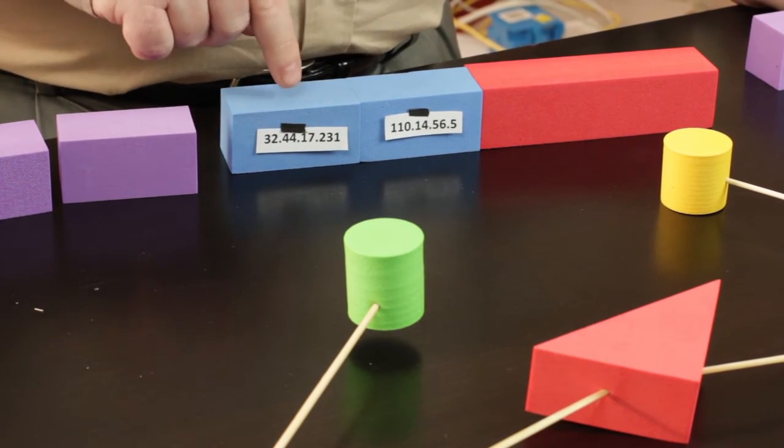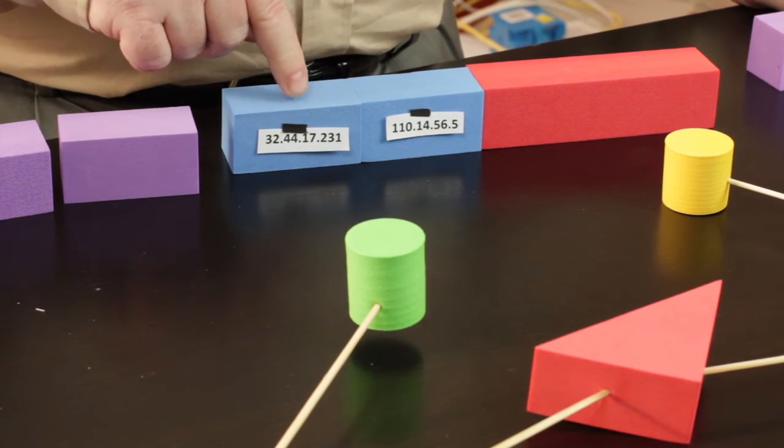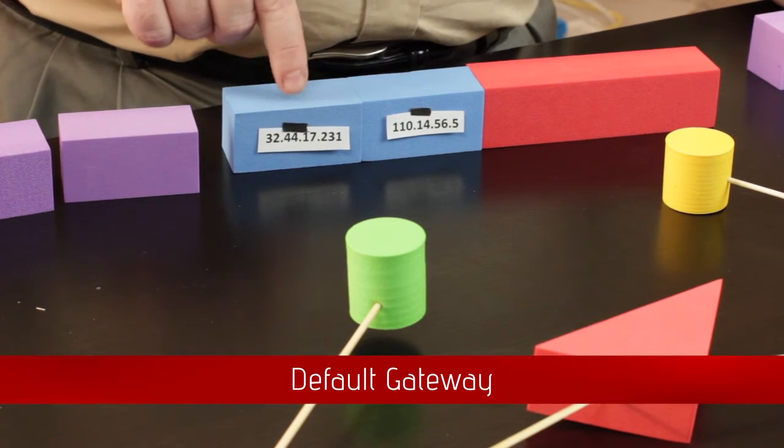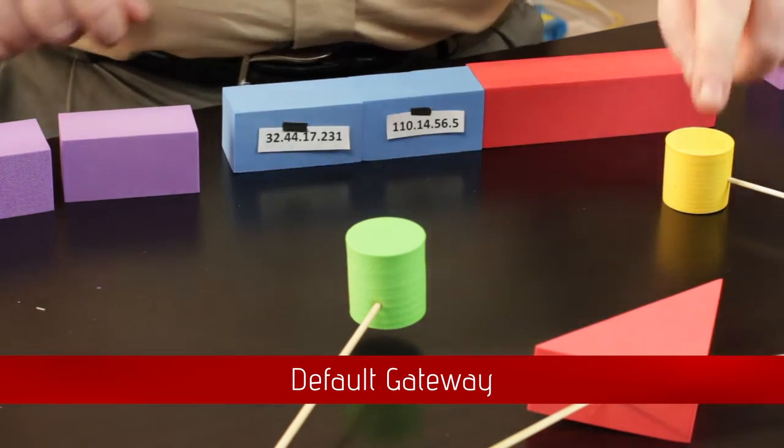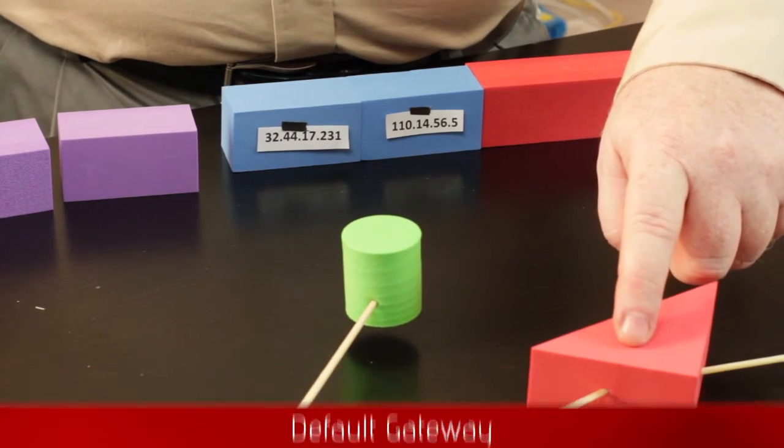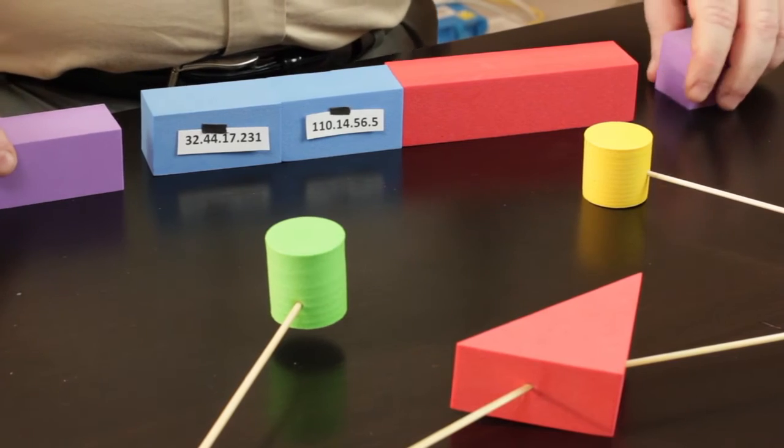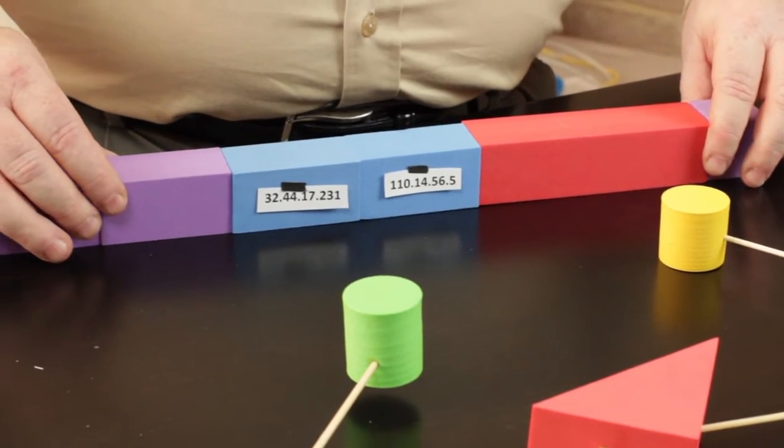When that happens, built into every computer in the universe, at least everyone that's on the internet, is something called a default gateway. The default gateway is invariably the connection to your router itself. So what will happen is that your computer will go ahead and put a frame around this IP packet.